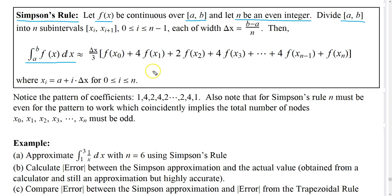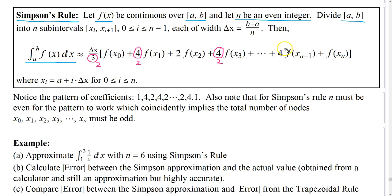You'll notice this is very similar to the trapezoidal rule. The only difference is that in place of this 3 we had a 2, and then we had the pattern 1, 2, 2, 2, 2, 2, and then ended with a 1 for our coefficients. So instead of a 4 here the trapezoidal rule had a 2, and all the 4s were 2s, ending with a 1 also.